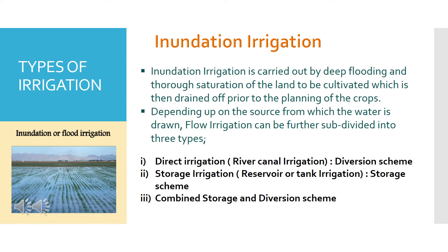Flow Irrigation is subdivided as follows: Direct Irrigation or River Canal Irrigation — this is a diversion scheme. Second, Storage Irrigation, also called reservoir or tank irrigation — this is a storage scheme. Third, Combined Storage and Diversion scheme.